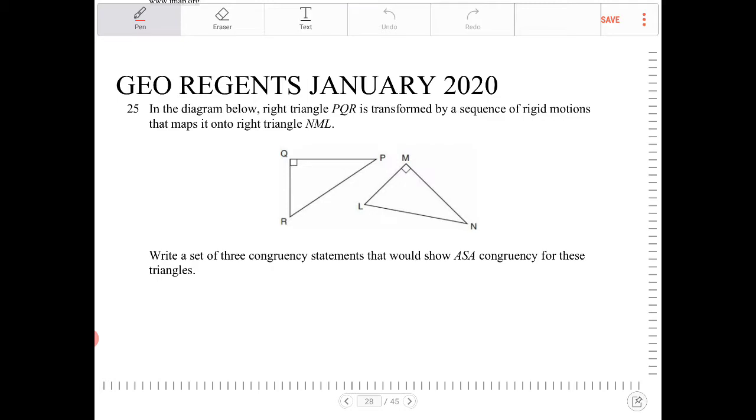Okay, so the right triangle PQR is transformed by a sequence of rigid motions that maps it onto NML. So immediately you can see that PQR and NML, all the corresponding angles there. P corresponds with N, Q corresponds with M, R corresponds with L. So these angles are going to be congruent.